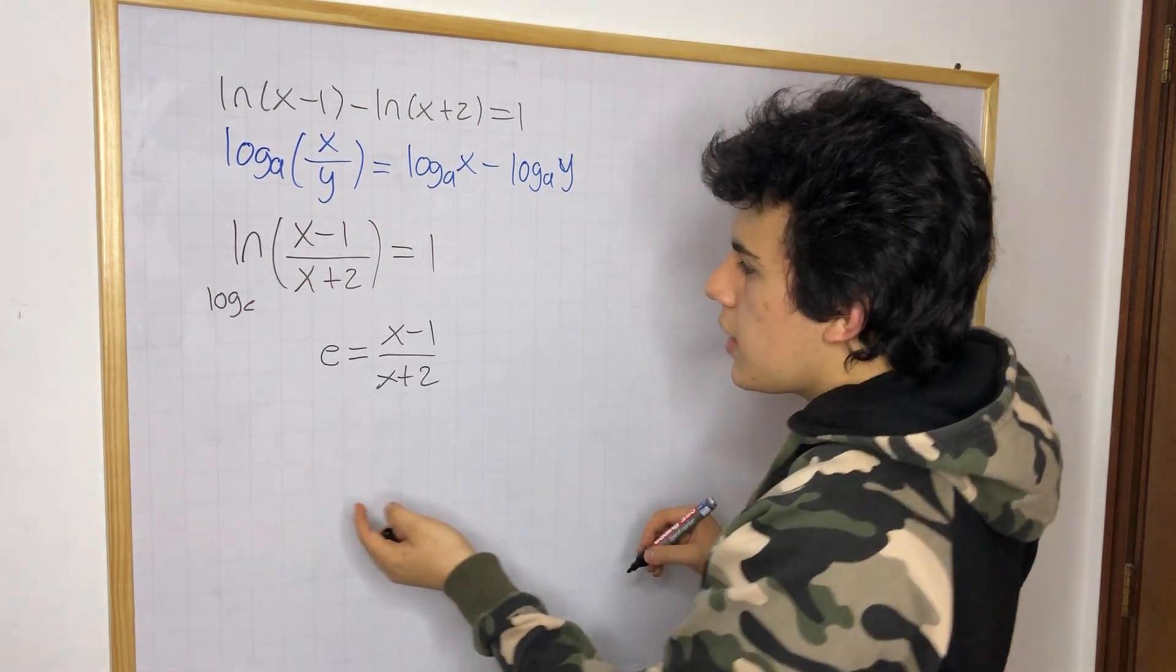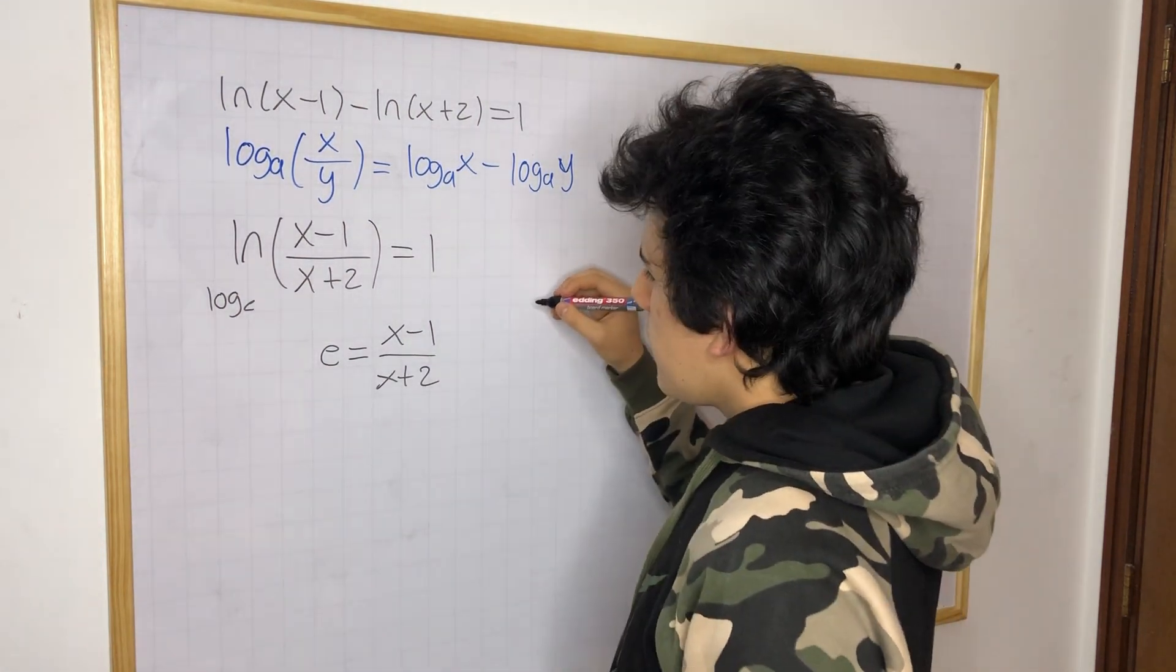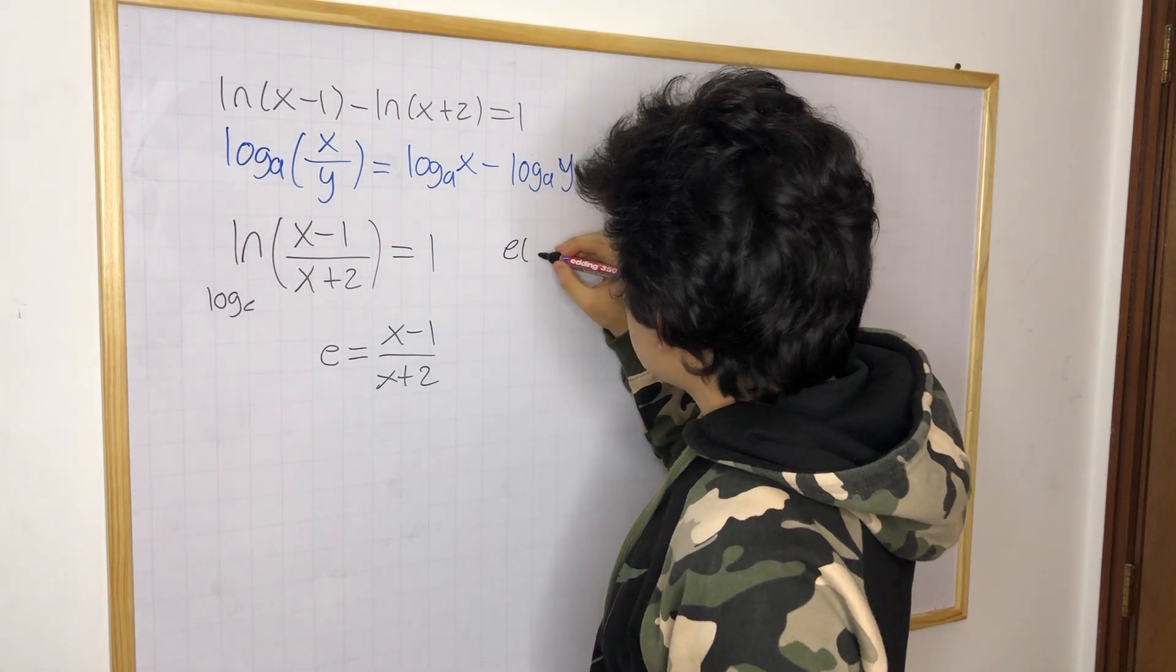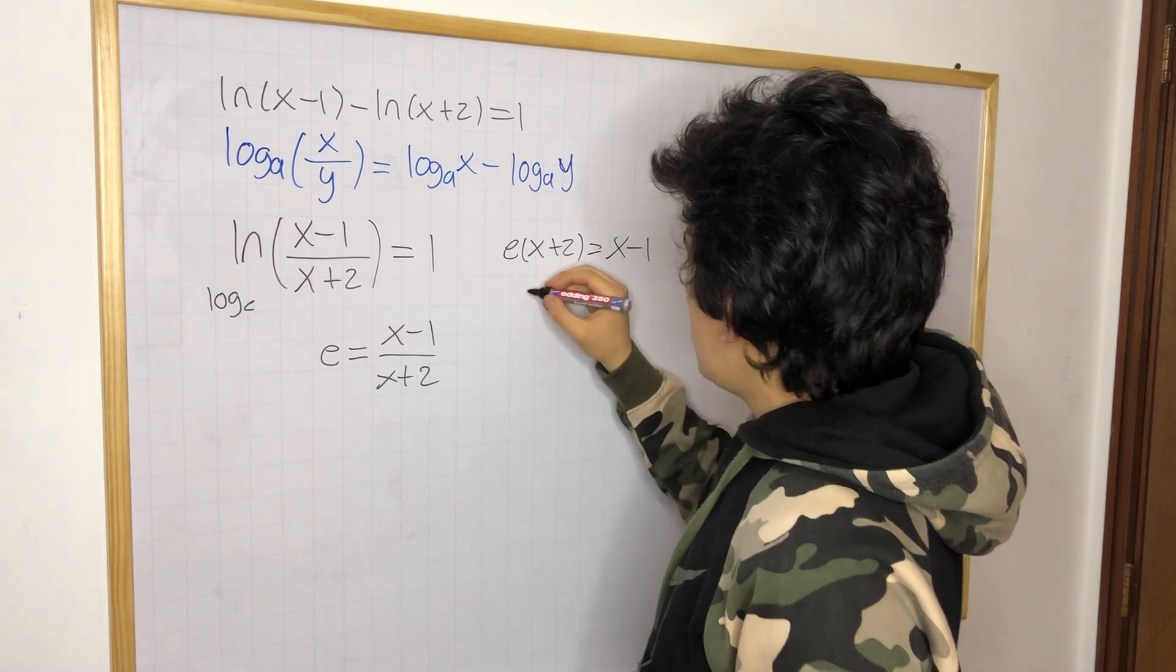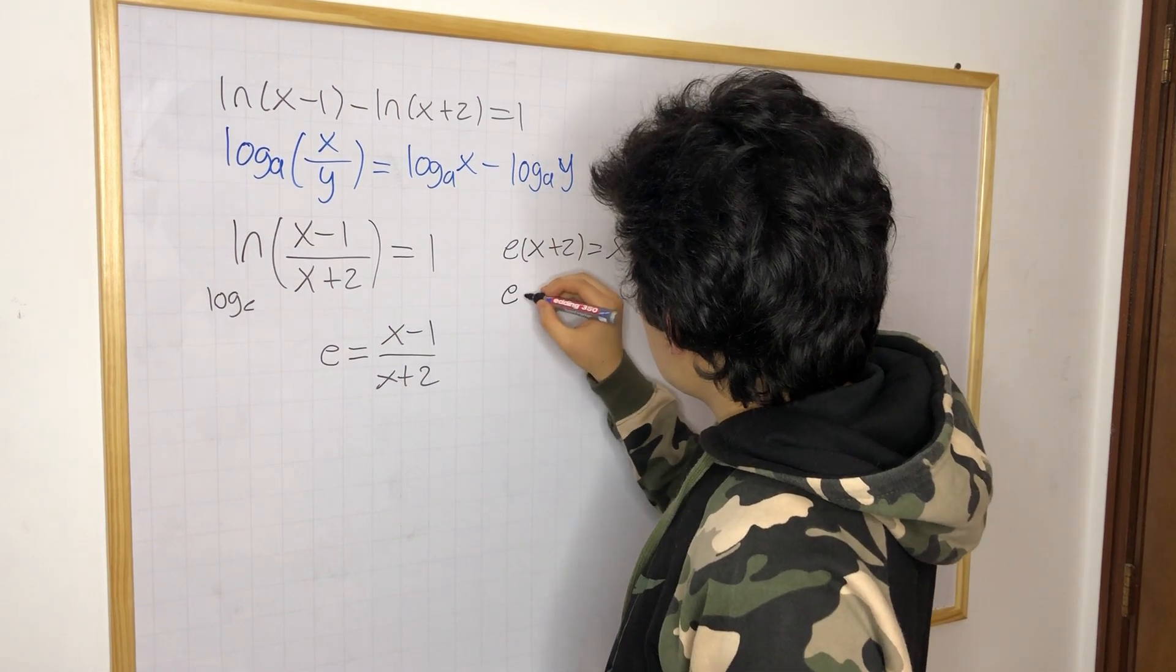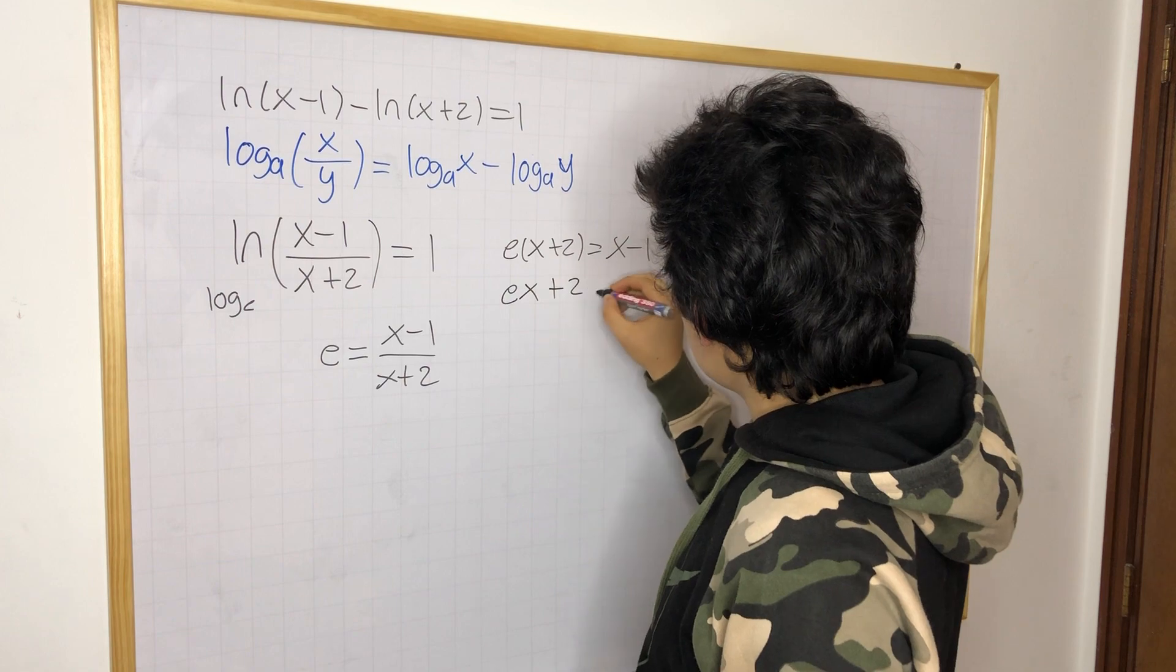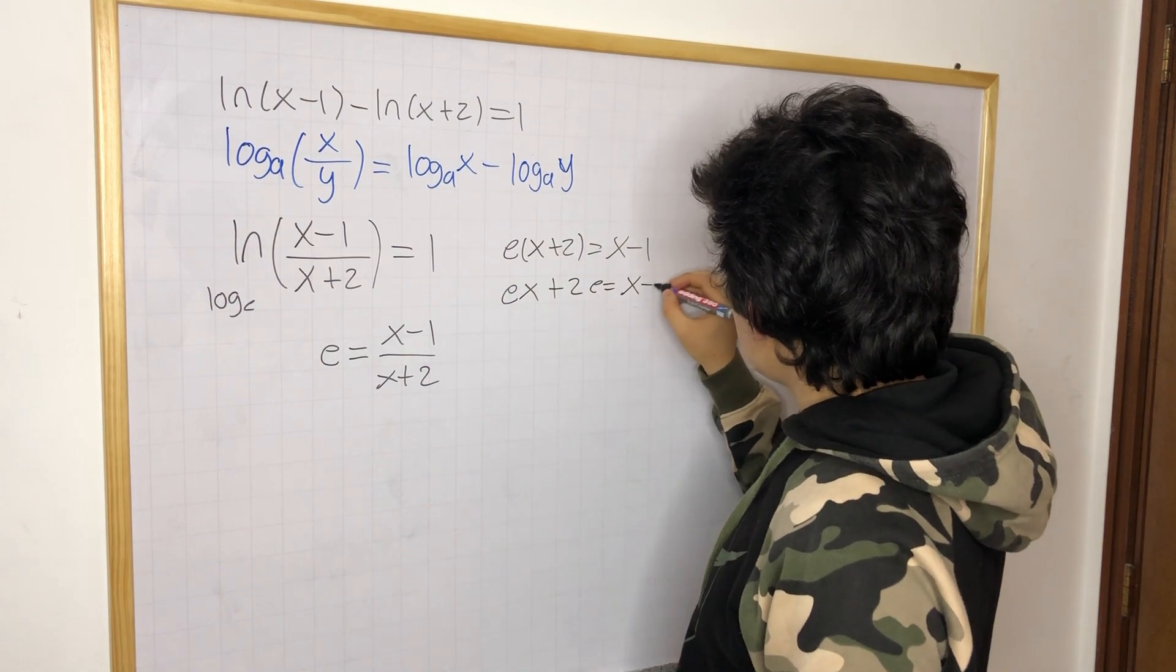Now we just simply need to find x, so let's play the algebra. So we know this is going to be e times x plus 2 is going to be equal to x minus 1. We can distribute, so we have e times x plus 2e is equal to x minus 1.